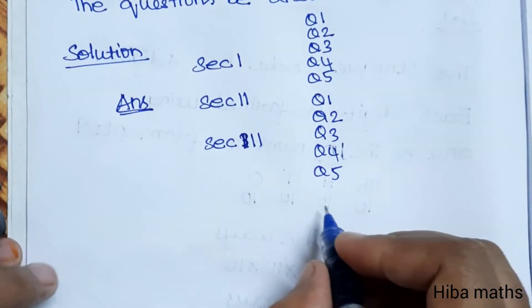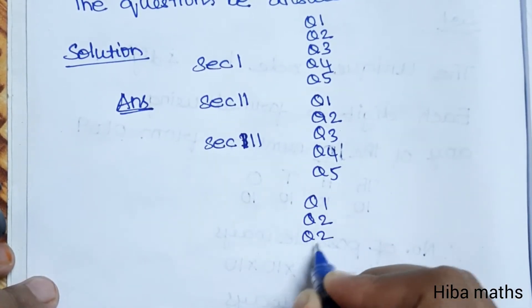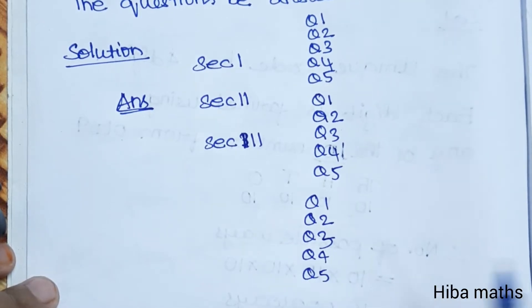In the third section, how many questions are there? Same 5 questions. Q1, Q2, Q3, Q4, Q5.